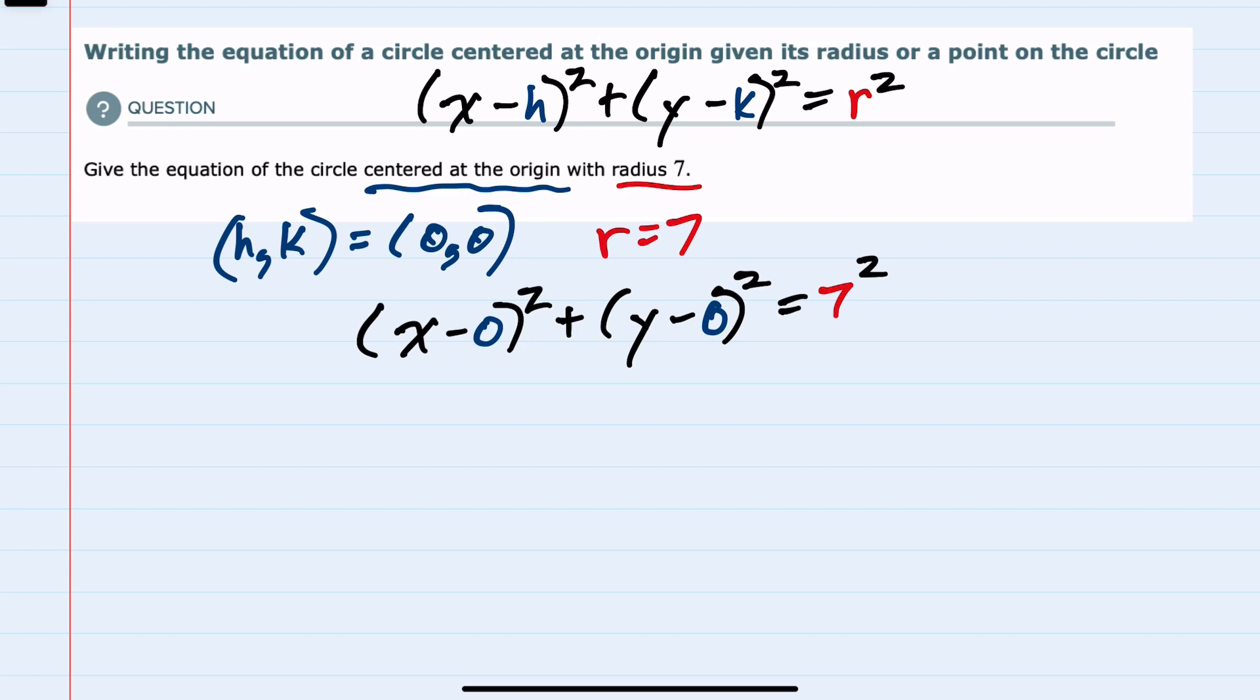And now we can simplify on both the left and right. Since x - 0 is just x, this would be x² plus y - 0 is just y, so that's y², equals 7 squared, which is 49.